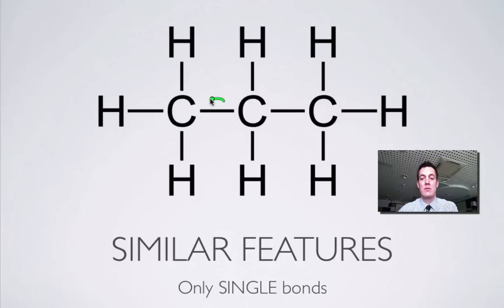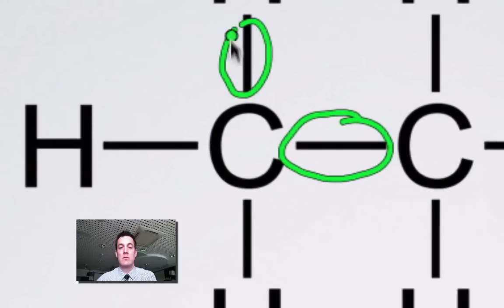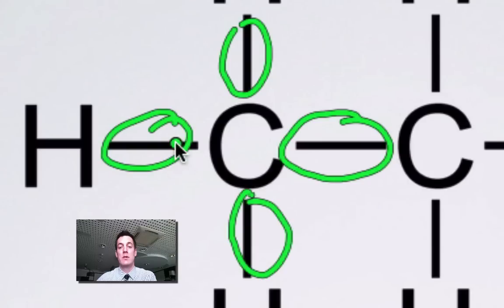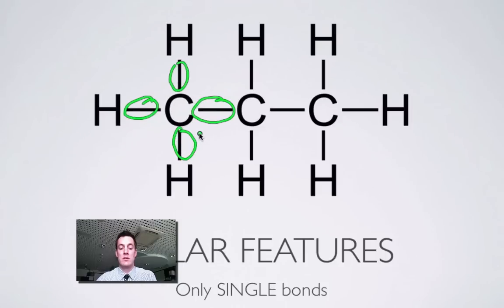Carbon is an atom that can form four bonds. If we look at this carbon atom, there are four bonds that it's made, but all of those bonds are single bonds. So if ever you get a compound that's only made of carbon and hydrogen and only has single bonds in it, then it's going to belong to the alkanes homologous series.